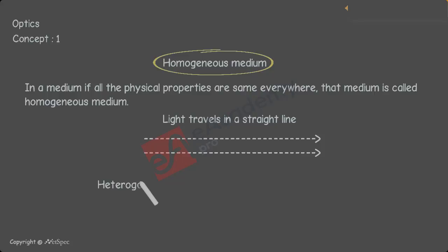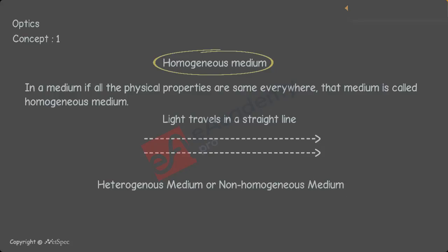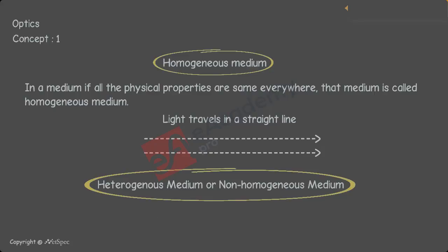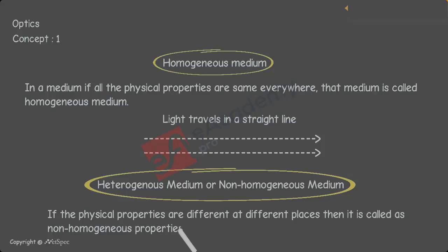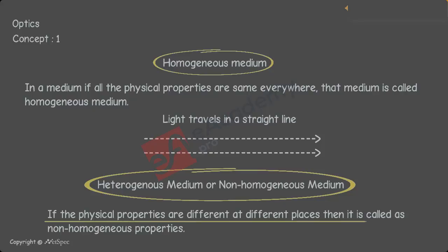The second type is a heterogeneous medium, also called a non-homogeneous medium. In a homogeneous medium, physical properties are the same. In a non-homogeneous medium, the physical properties are different at different places.